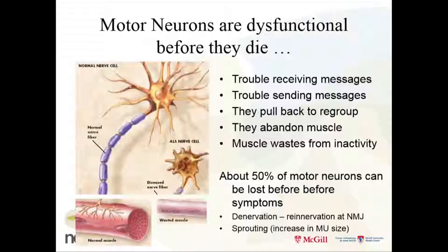It's important to remember that motor neurons are dysfunctional and sick before they die. I think this gives us hope because there may be neurons in the spinal cord or brain or cortex that are just kind of pulling the covers back over their head — like they had the flu — and when they get better, they can grow back out. That gives us hope that we could get some improvement if we had a therapy that really worked.